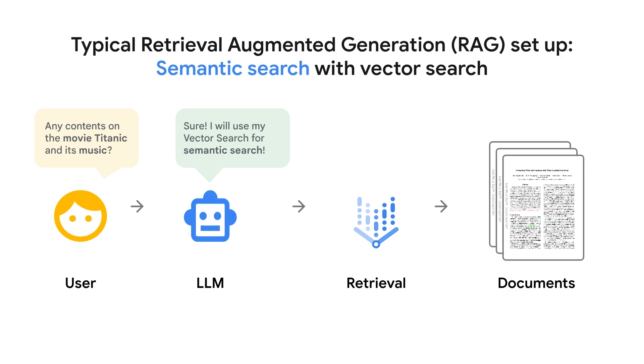That way, the AI can give up-to-date answers and is less likely to just make things up — so-called hallucinations.